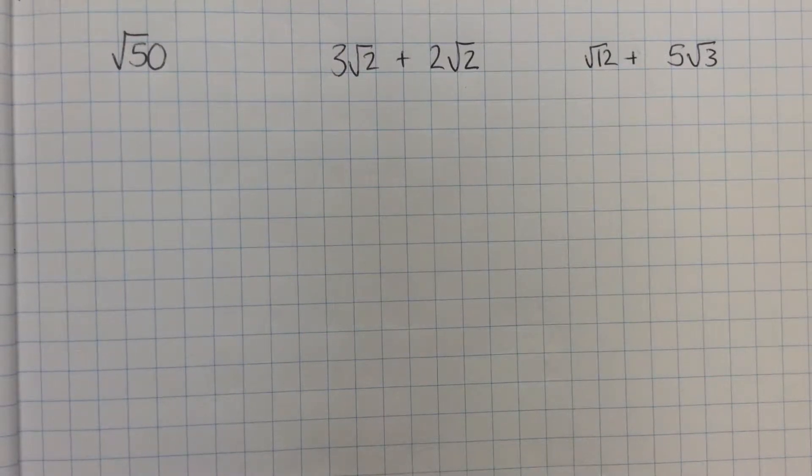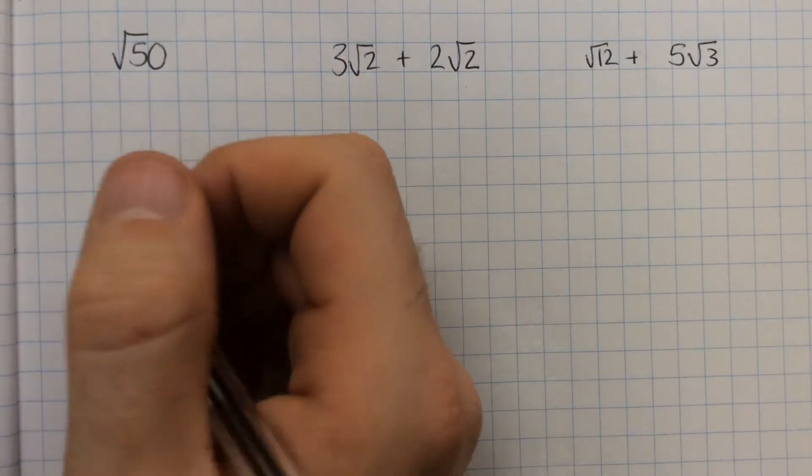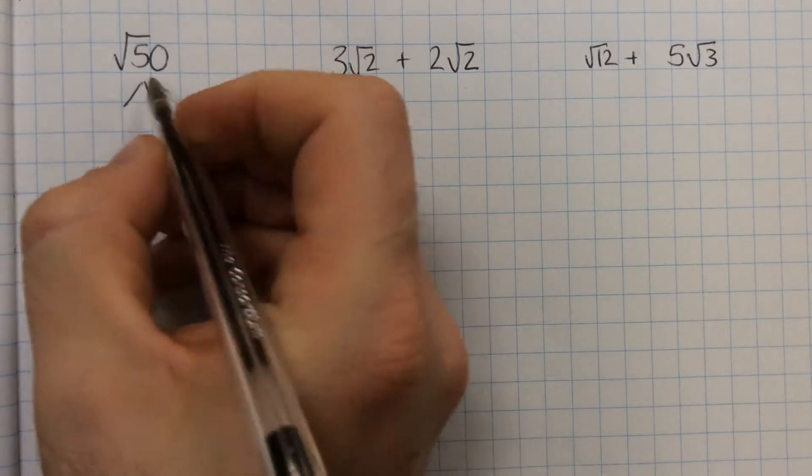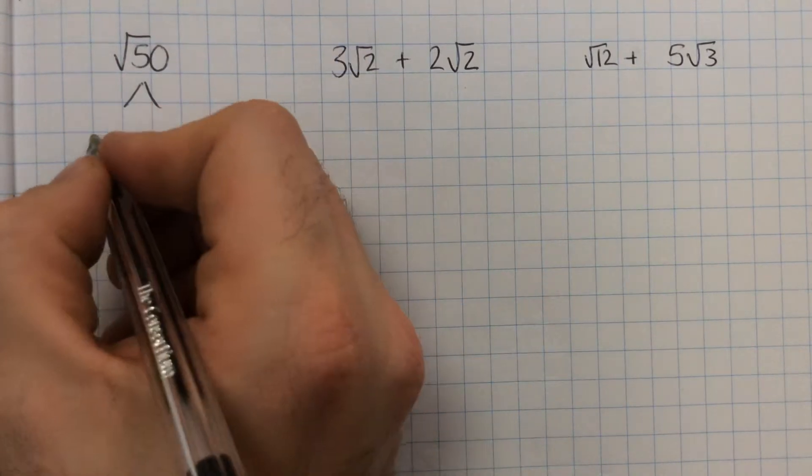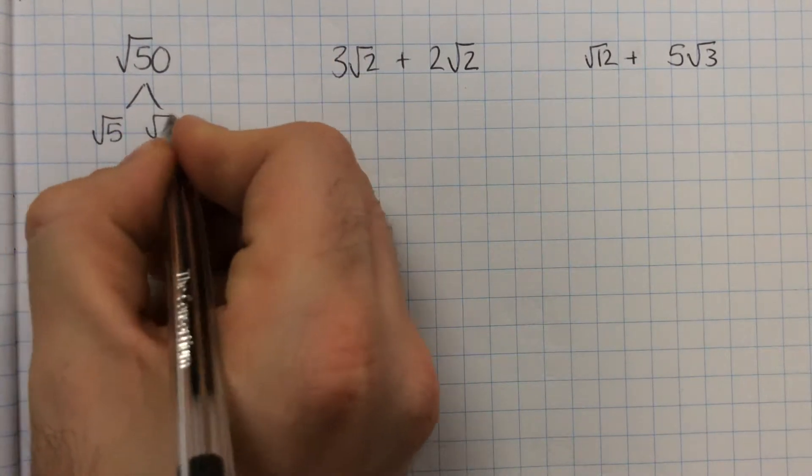So, simplifying surds. The first type is just to simplify a surd as far as possible. We're just looking for any two numbers that multiply to make 50. So we could have the square root of 5 times by the square root of 10.